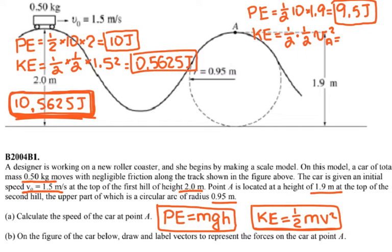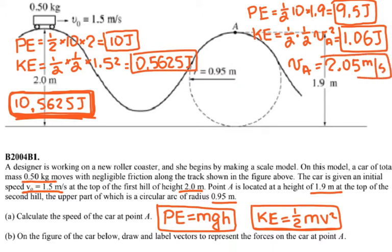So the kinetic energy equals 1.0625 joules. If I solve for the velocity by multiplying both sides by 4 and taking the square root, I will have the velocity equal to 2.05 meters per second at point A. That would be my answer for A.